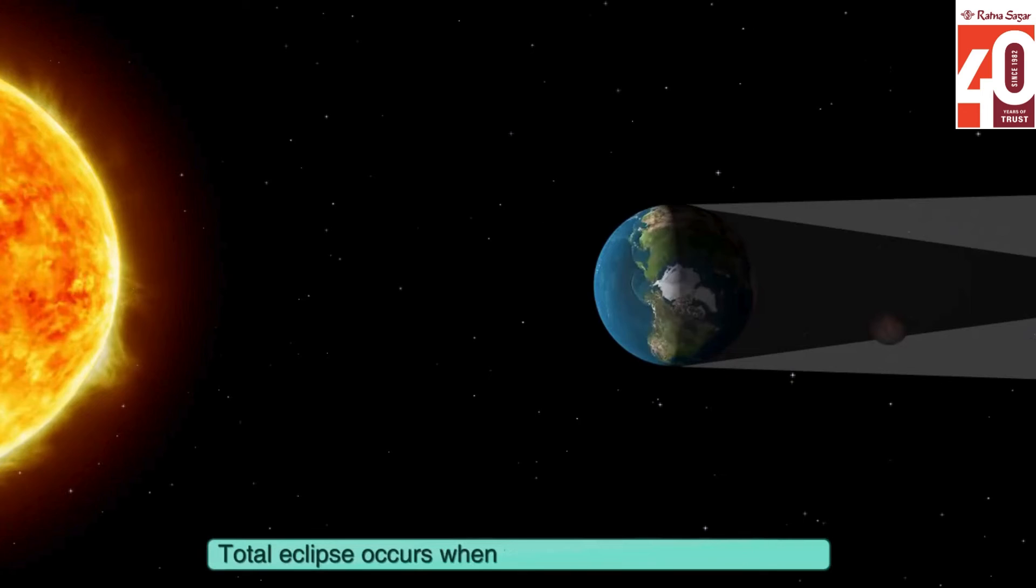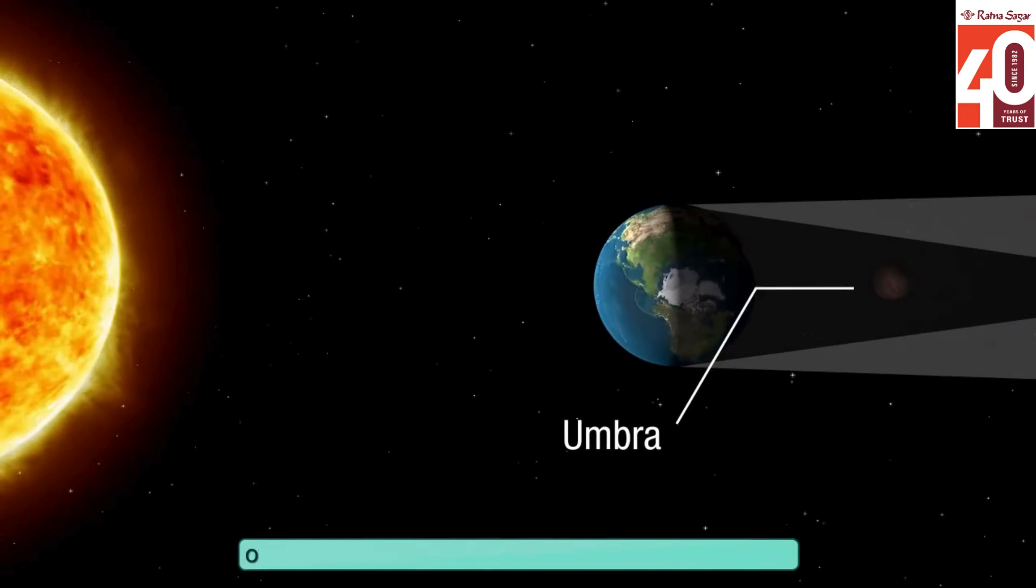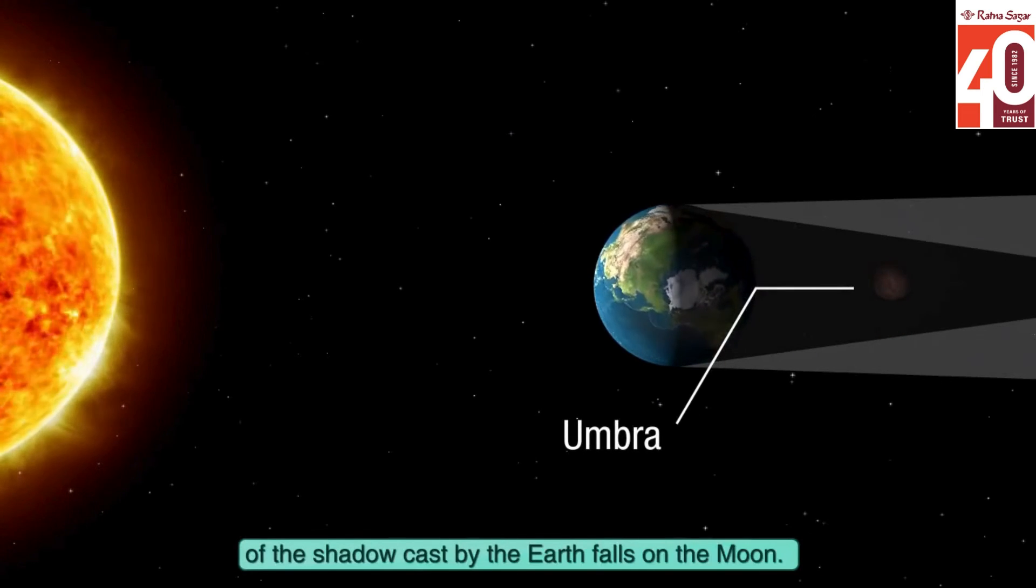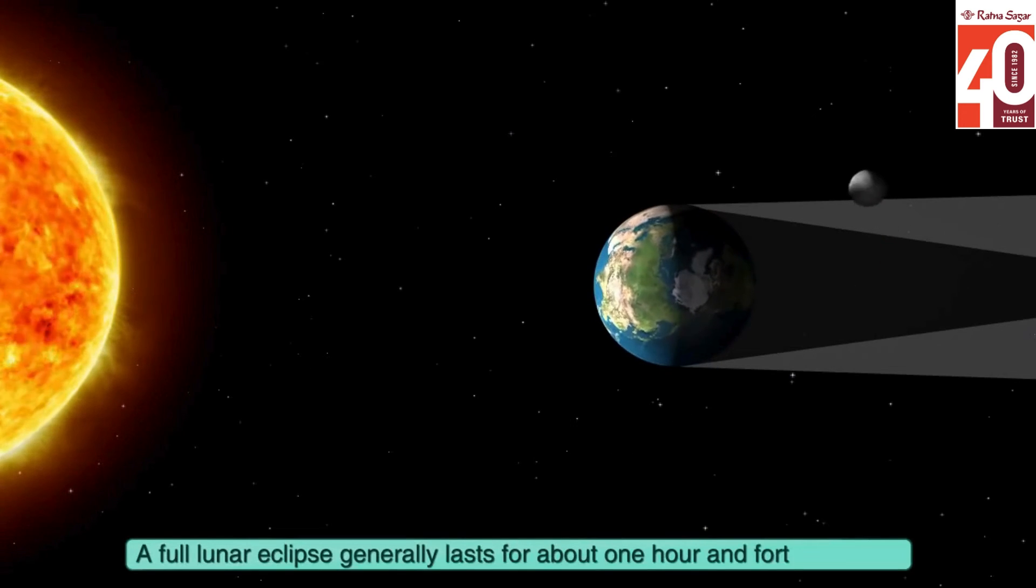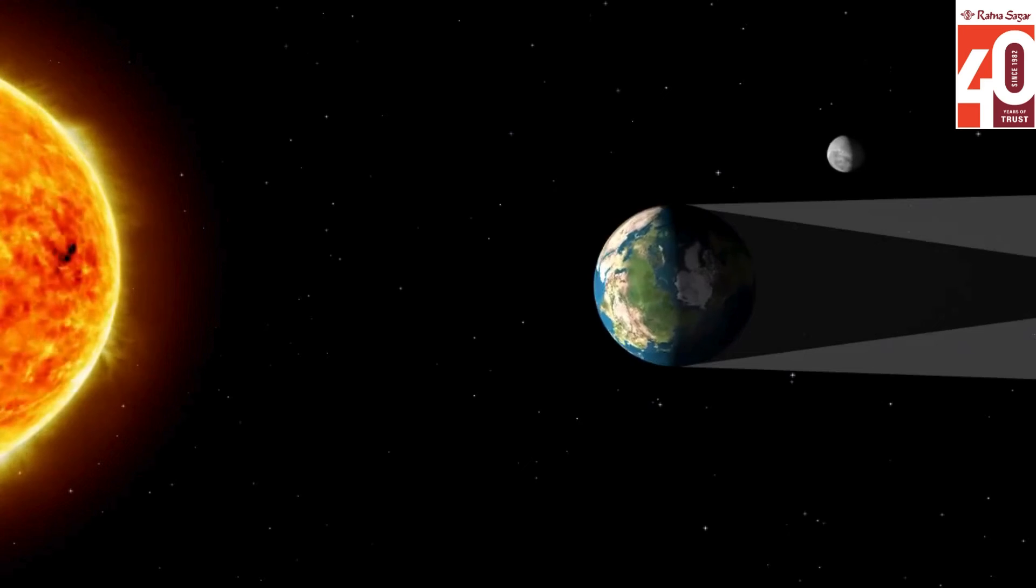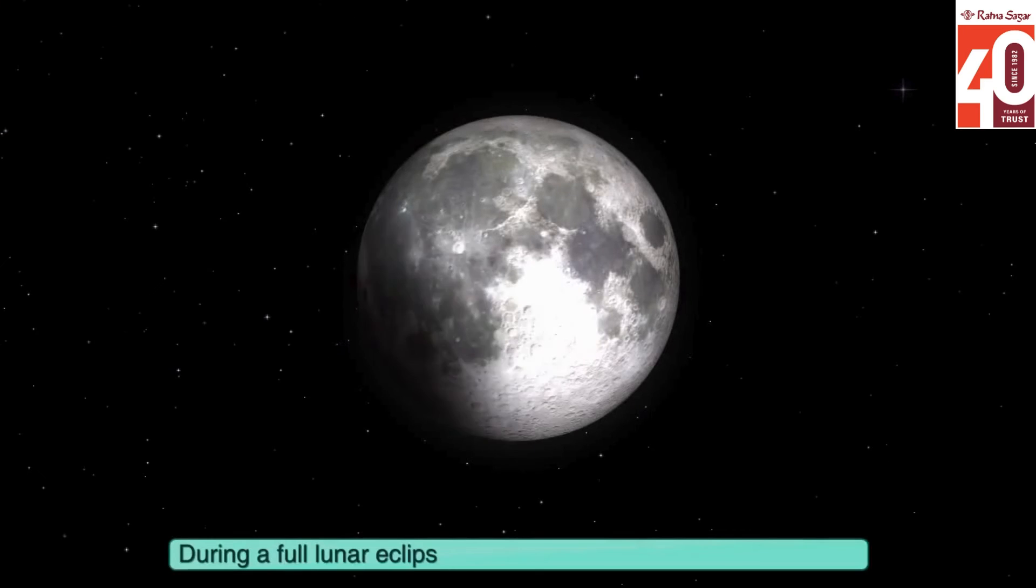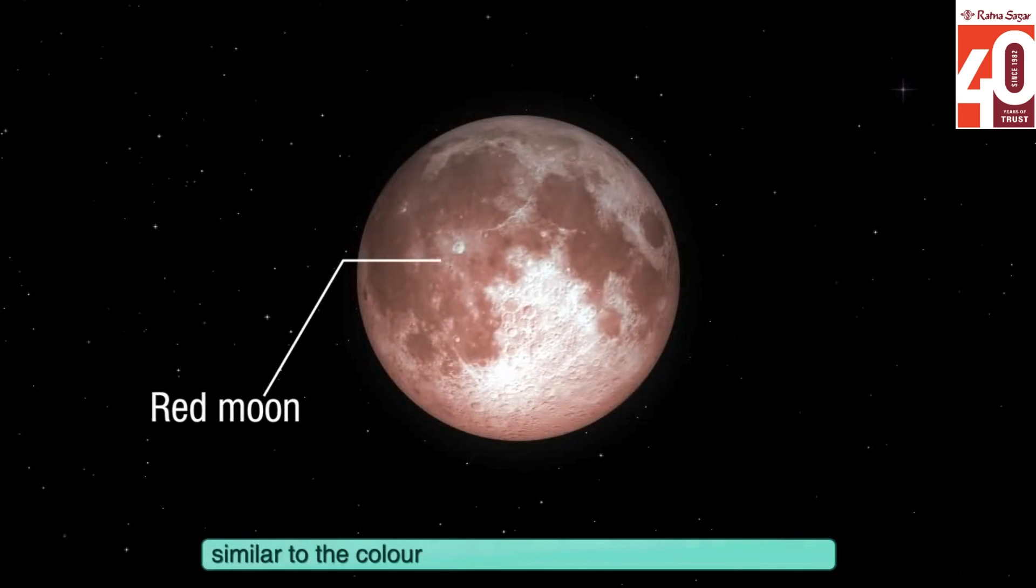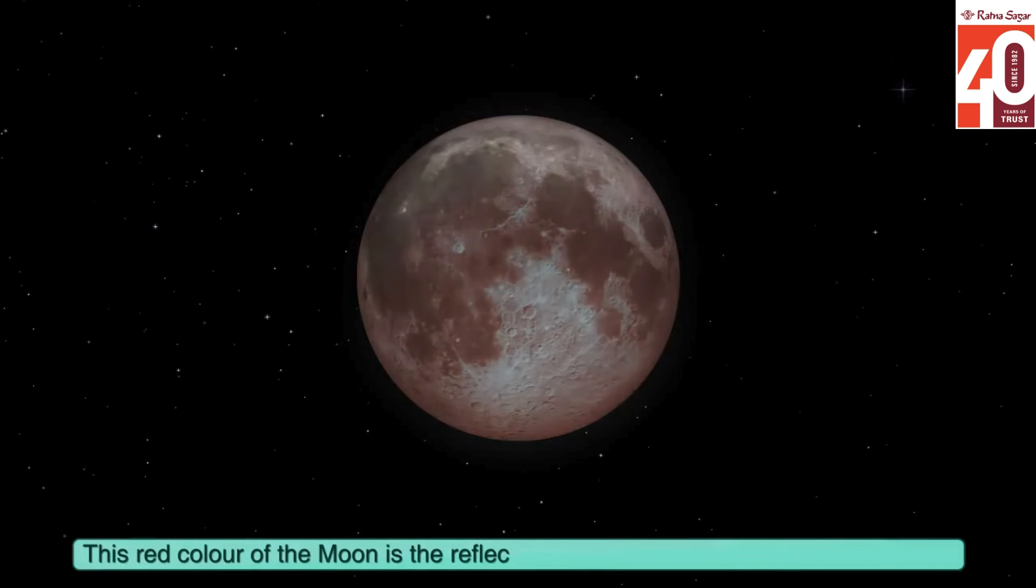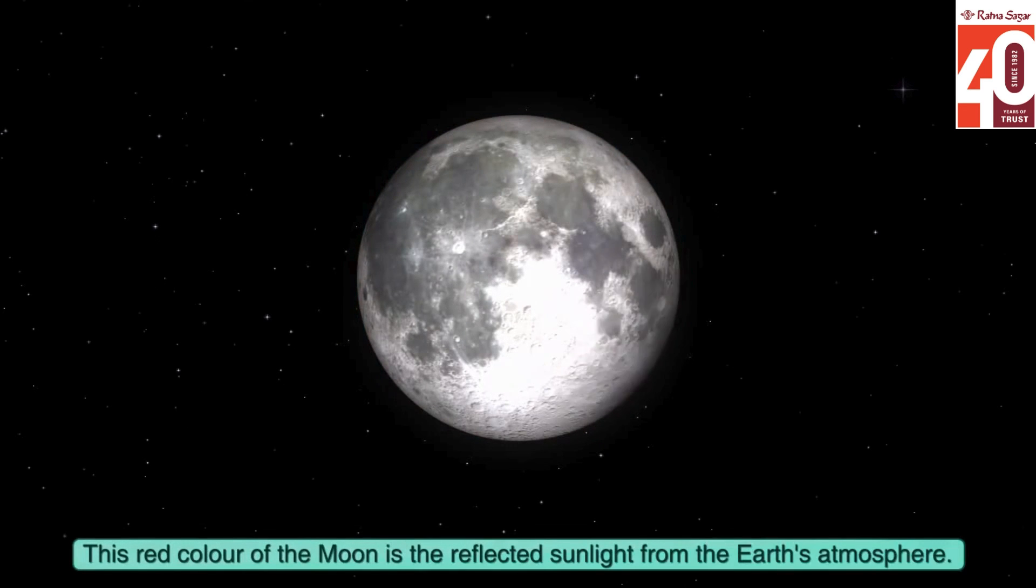Total eclipse occurs when the umbra, or the darkest part of the shadow cast by the Earth, falls on the moon. A full lunar eclipse generally lasts for about one hour and 40 minutes. During a full lunar eclipse, we can see the moon as slightly red, similar to the color of the sky during sunrise and sunset. This red color of the moon is the reflected sunlight from the Earth's atmosphere.